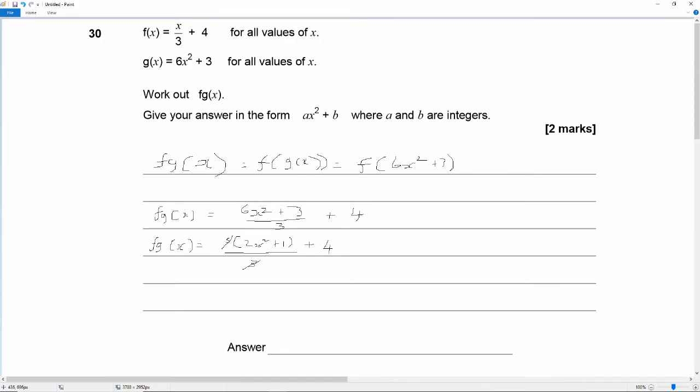So fg of x is equal to 2x squared plus 1 plus 4. Well 1 plus 4 is 5. So the answer is 2x squared plus 5.